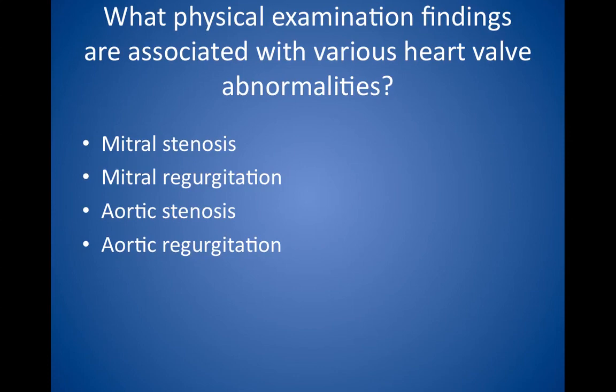Aortic stenosis is typically seen in older adults. Bicuspid or unicuspid valves may appear with symptoms in childhood. The history is usually asymptomatic for years and begins with dyspnea on exertion. It then progresses to angina, syncope, and heart failure, with the mortality rate increasing through this progression. Aortic regurgitation can be remembered with the CREAM mnemonic: C and R for congenital and rheumatic damage, E for endocarditis, A for aortic dissection or aortic root dilatation, and M for Marfan syndrome.